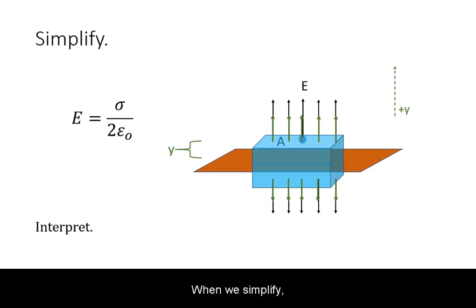When we simplify, we get the result that the electric field at any point from an infinite, uniform, plane charge is constant.